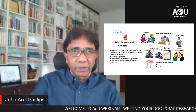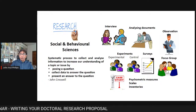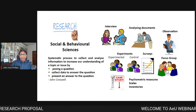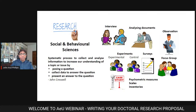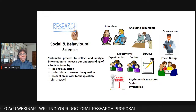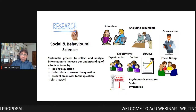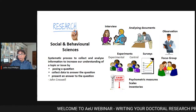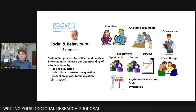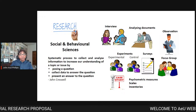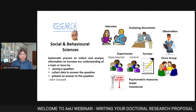Let's look at the word research in the behavioral and social sciences. Cresswell gives a very good definition: research is a systematic process to collect and analyze information to increase our understanding of a topic. The key word is systematic. You begin with posing a question, collect data to answer the question, and then present an answer based on your data.